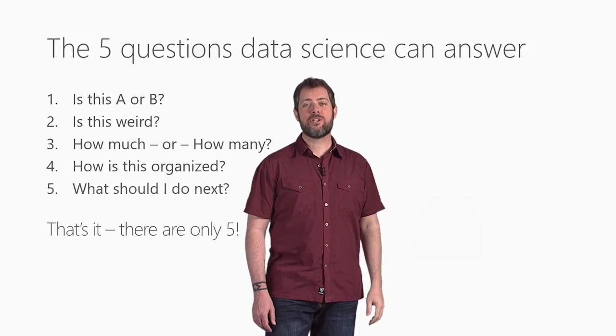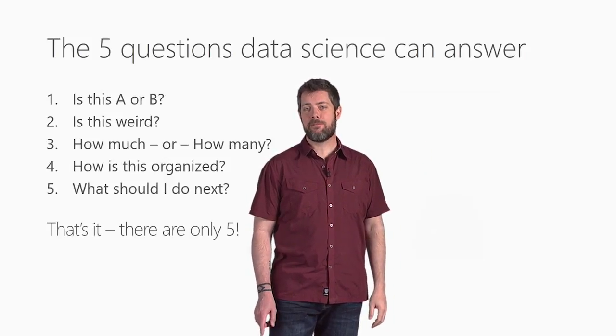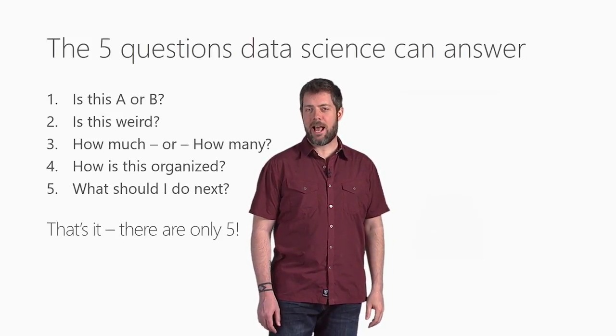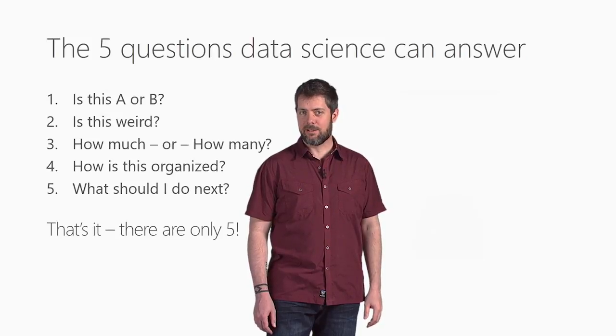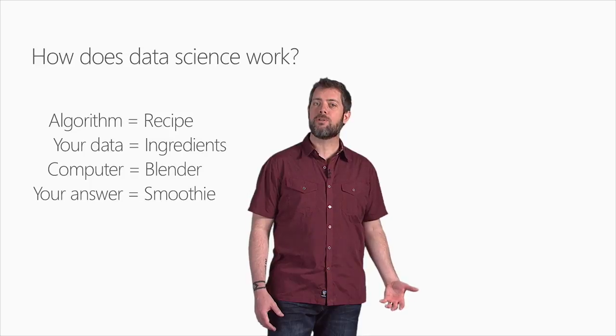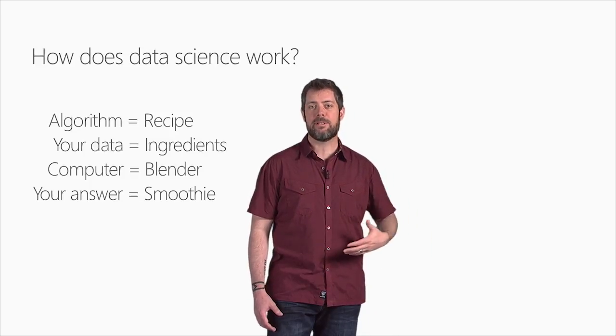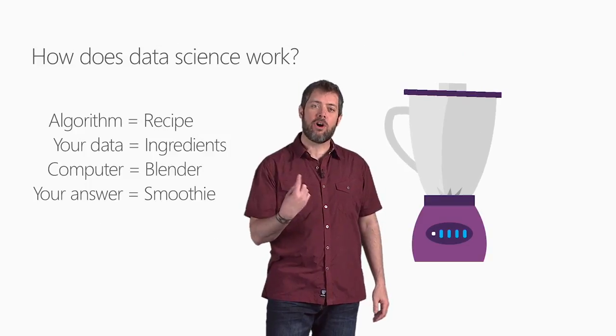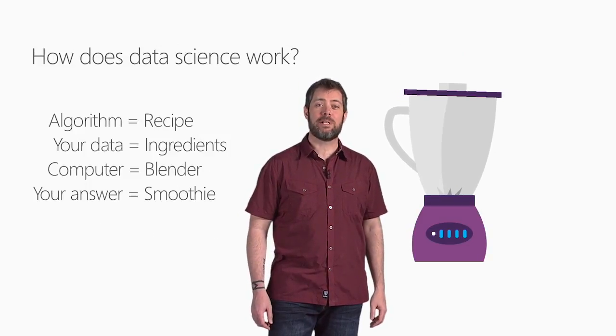Each one of these questions is answered by a separate family of machine learning methods called algorithms. It might be helpful to think about an algorithm as a recipe. You put your data as the ingredients, and the algorithm tells you how to combine and mix them to get an answer. And computers are like a blender. They do most of the hard work of the algorithm for you, and they do it really fast.